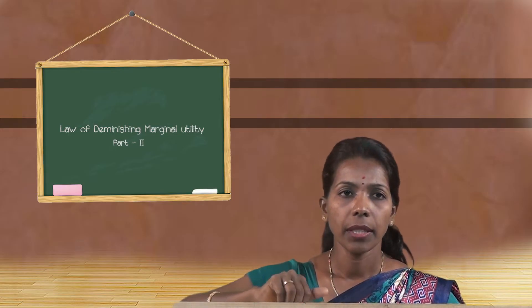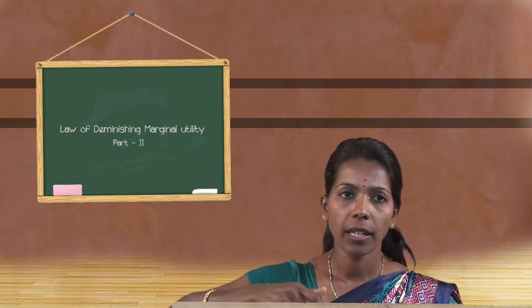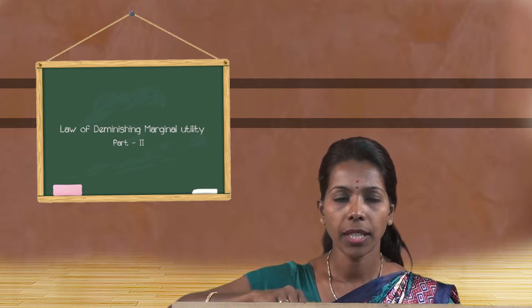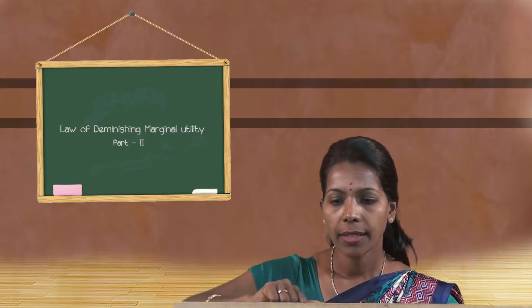If the consumer then consumes one more glass — the sixth glass — the marginal utility becomes disutility. In the diagram, the MM curve falls below the OX axis, indicating negative marginal utility.